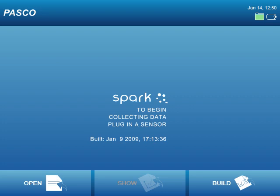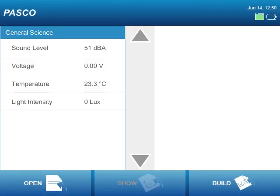Starting here at the home screen, we can connect a sensor to the top of the device, and the home screen changes to show us the name of the sensor we've connected and the measurements available from that sensor. In this case, I connected a general science sensor, which offers four measurements.